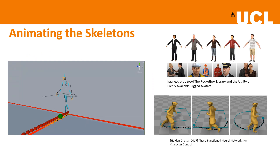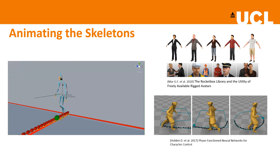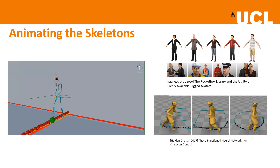We wanted to keep realistic animations for all our tests. We took inspiration from the locomotion synthesis work of Holden in 2017, based on deep learning. We used the Microsoft RocketBox character set and applied animations, recording joint positions to avoid performing the simulation in real-time. This was required for performing the experiment on untethered devices such as the Oculus Quest.